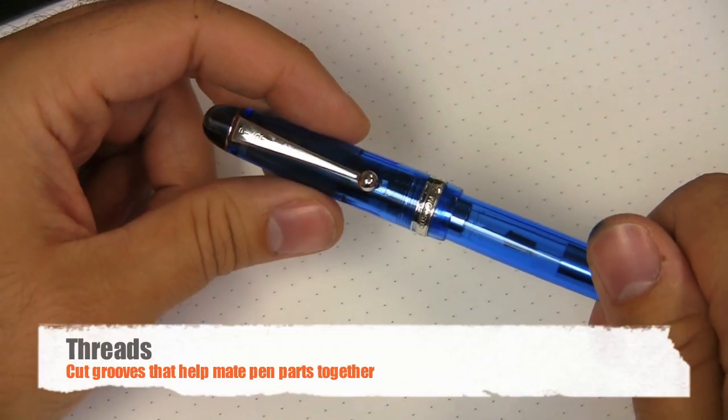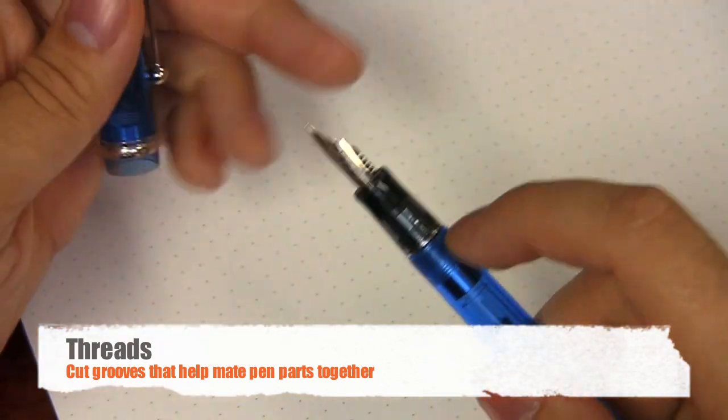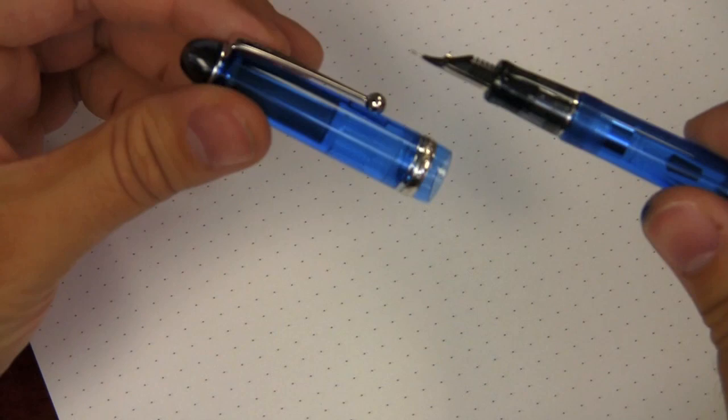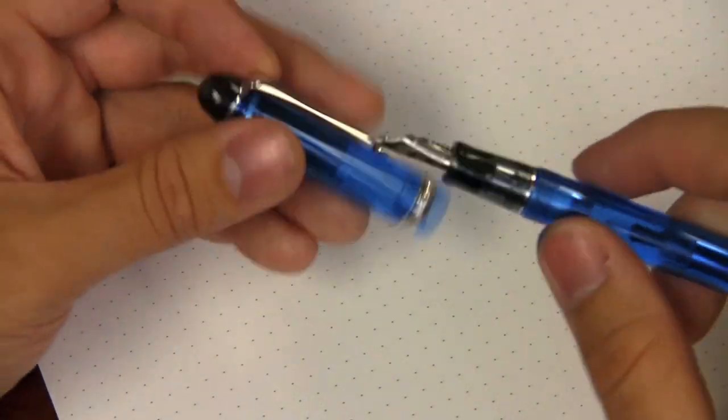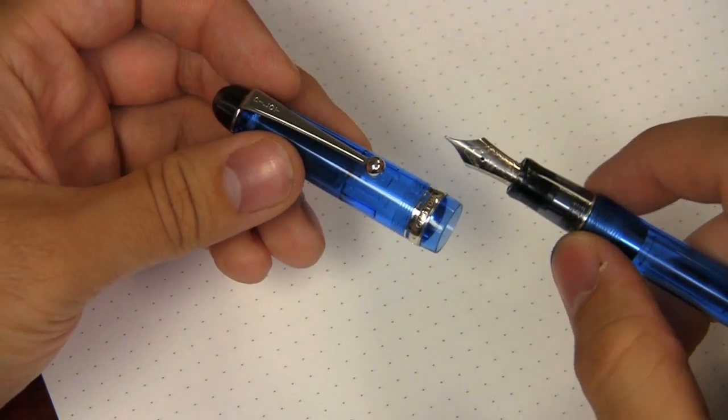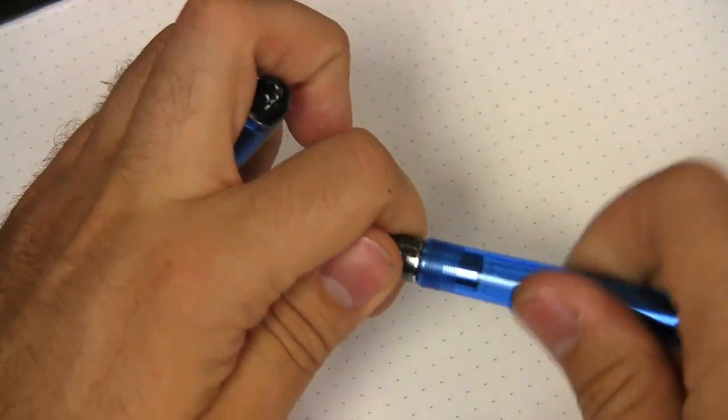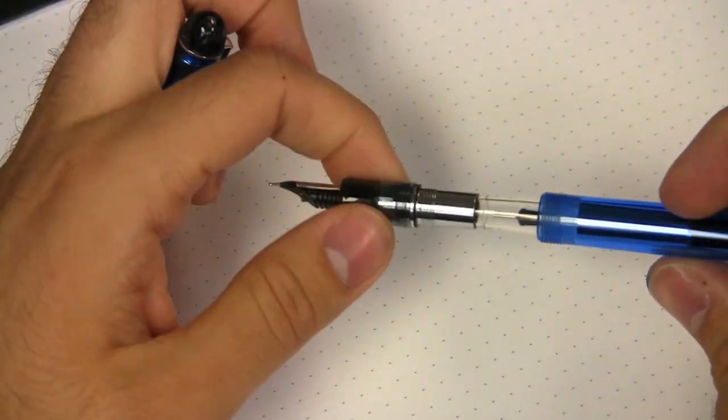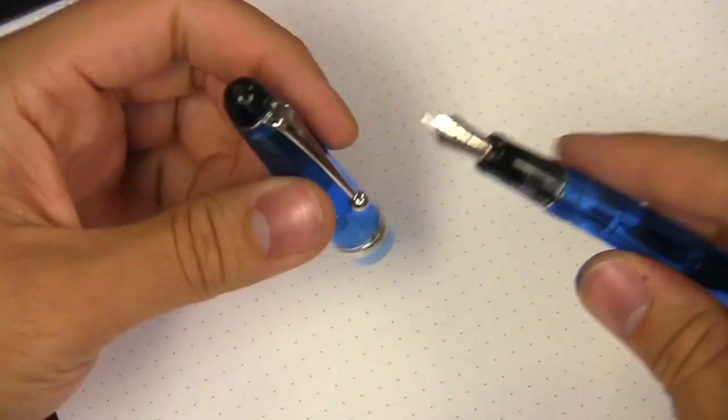The threads refer to these little bumpy guys right here. That is what allows one pen part to mate to another. Generally the only ones you're going to see on a regular basis will be if you have a screw type cap like this pen right here. You'll see the threads right there. That's what mates up to the cap. But there's threads in other places too, such as where the body mates up to the grip section, or other parts of the pen such as the finial may have it as well.